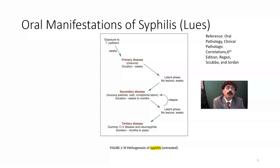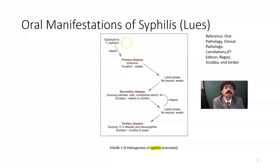Syphilis is also called LUES. It is a venereal disease — a sexually transmitted disease, transmitted by sexual encounters. The organism responsible for syphilis is Treponema pallidum, which is a spiral-shaped bacteria. It is inoculated into the skin or mucous membrane, and it takes several weeks to manifest as a chancre — maybe 3 to 90 days, with around 3 months being the average incubation period.